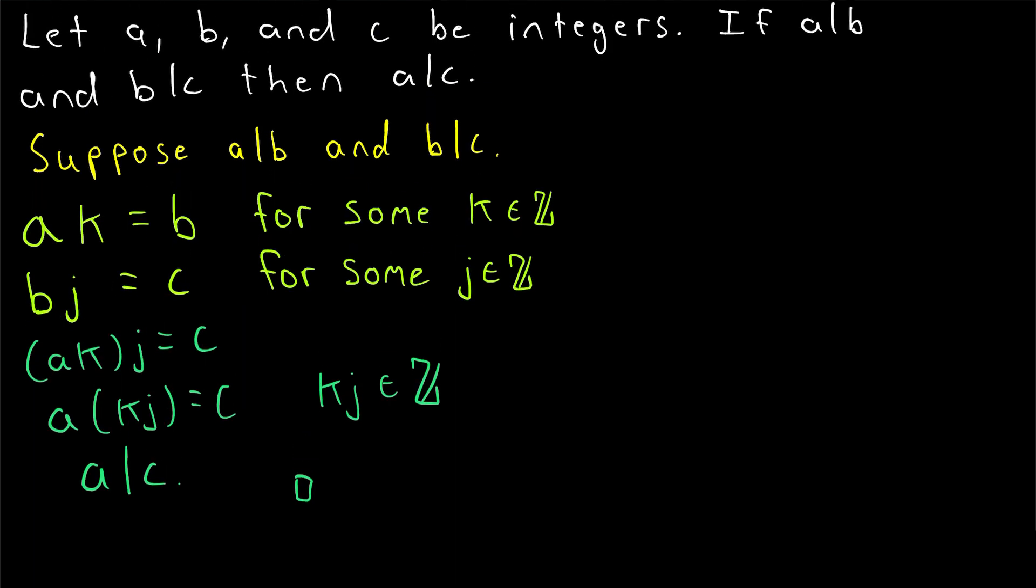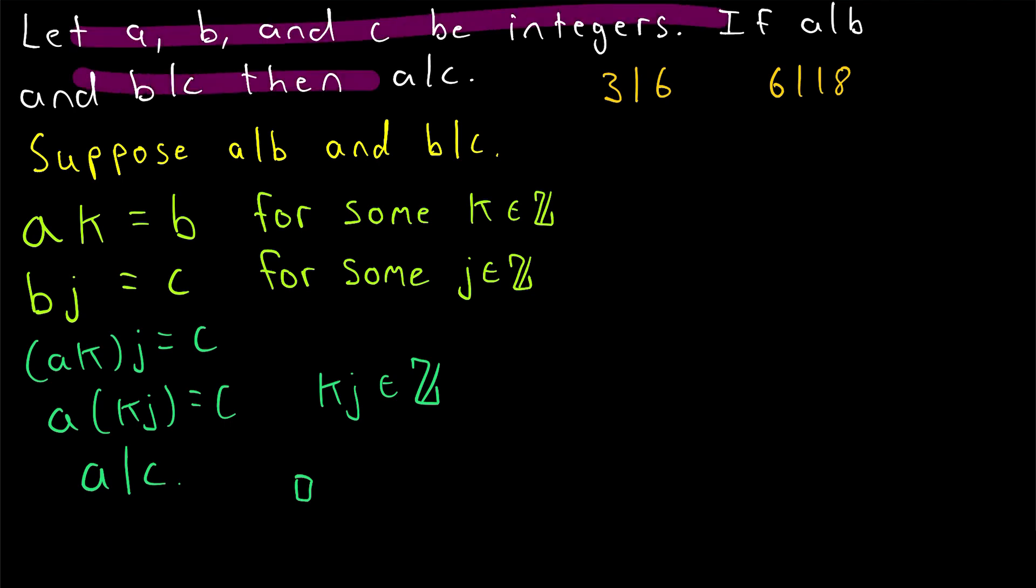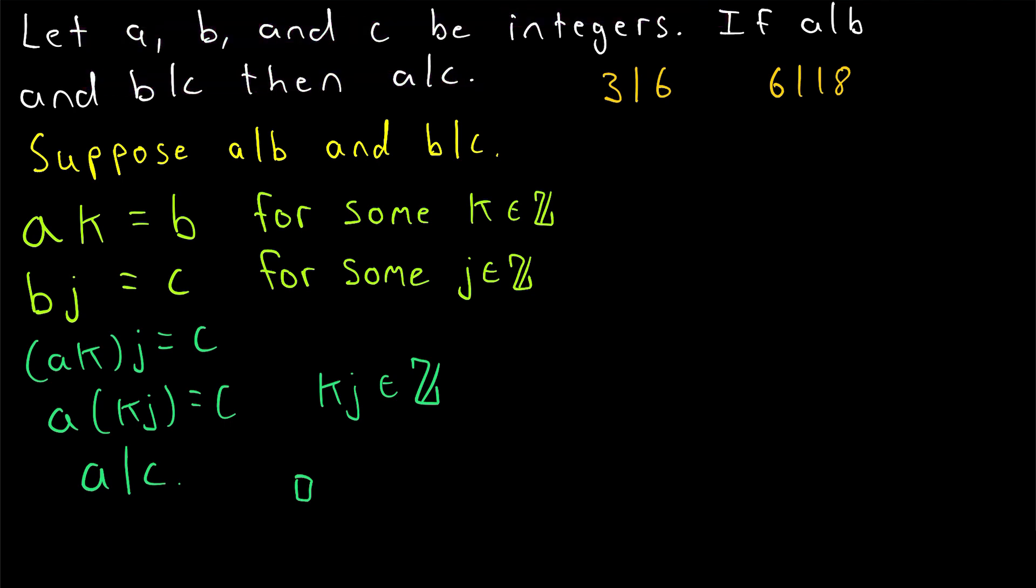So if we have three integers A, B, and C, and we know that A divides B and B divides C, then it must be the case that A divides C. Here's an example of this theorem in action. We know that three divides six. We also know that six divides 18. So since the relation divides is transitive, which is what we just proved, we know that three must divide 18.